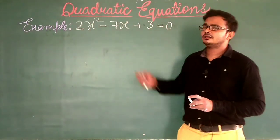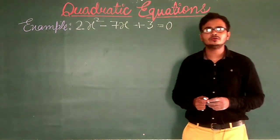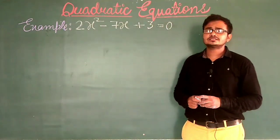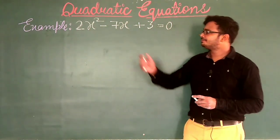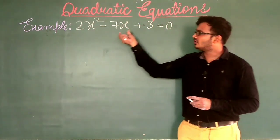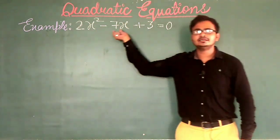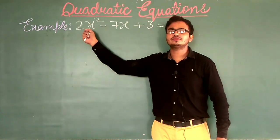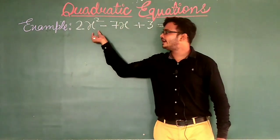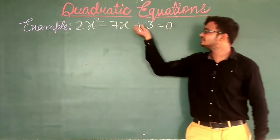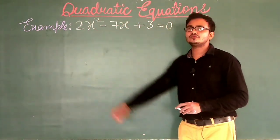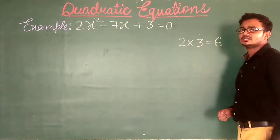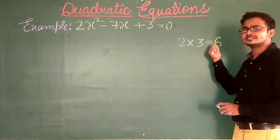Now we will do one example to solve this with the help of the factorization method and find the value of X. Your equation is 2X square minus 7X plus 3 is equal to 0. The first step is to arrange the equation in standard form, but this equation is already in standard form — first the X square term, then the X term, then the constant.